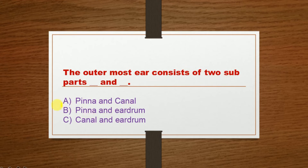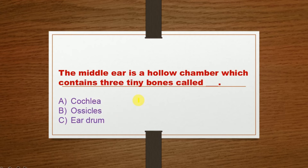Option A: Pinna and canal, Option B: Pinna and ear drum, Option C: Canal and ear drum. The correct option is Option A: Pinna and canal. Next question: The middle ear is a hollow chamber which contains three tiny bones called dash.